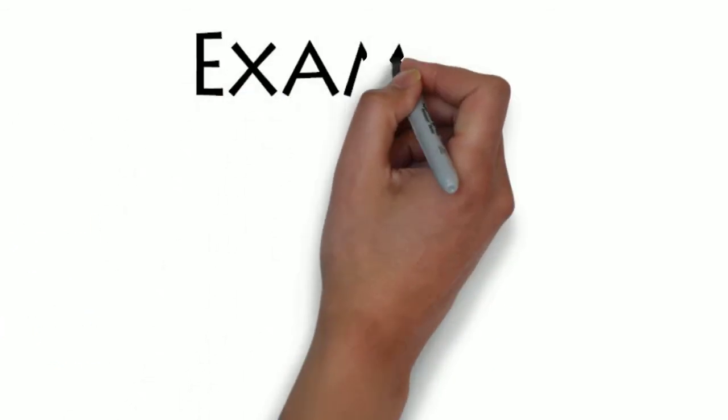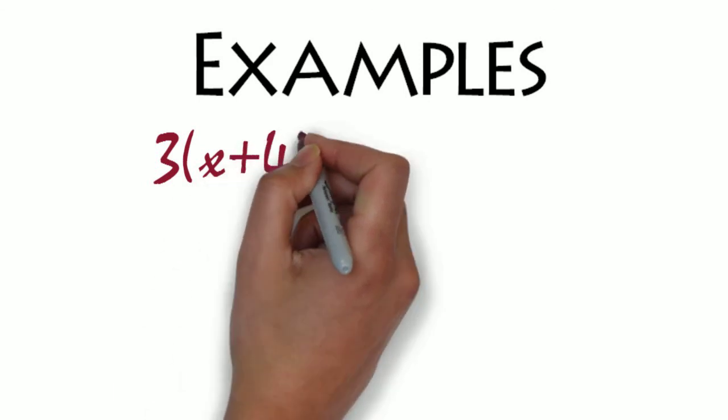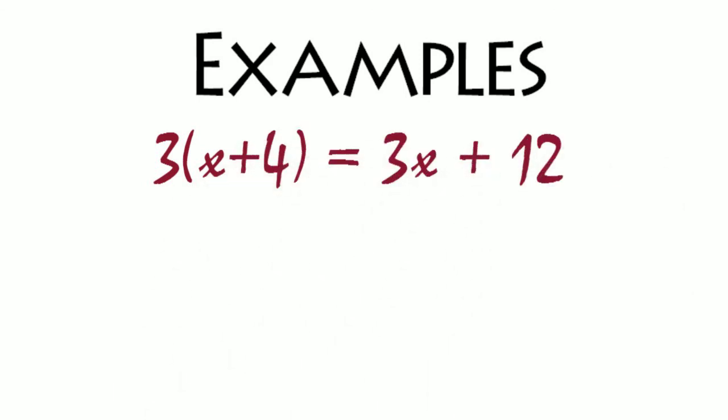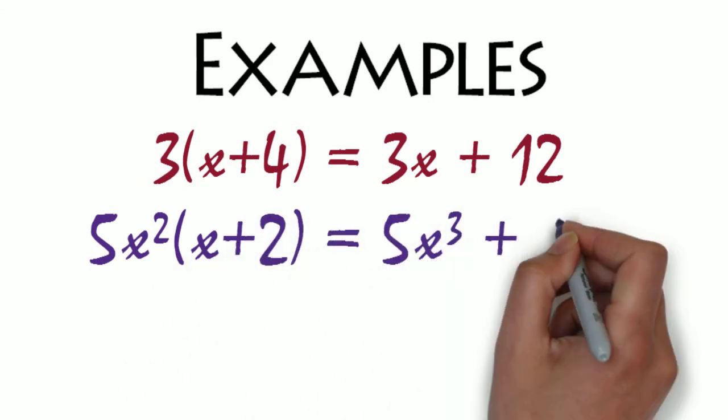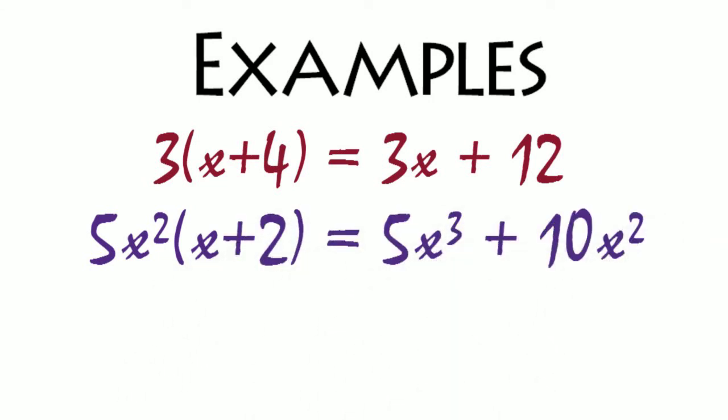Examples are always helpful. 3 times x plus 4 is 3x plus 12. 5x squared times x plus 2 is 5x cubed plus 10x squared.